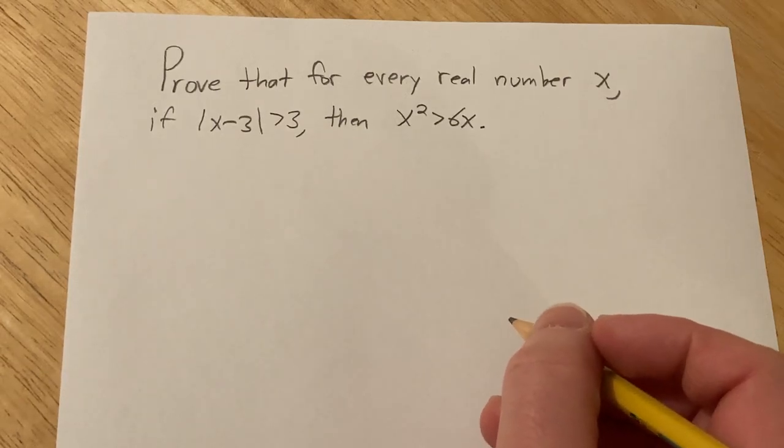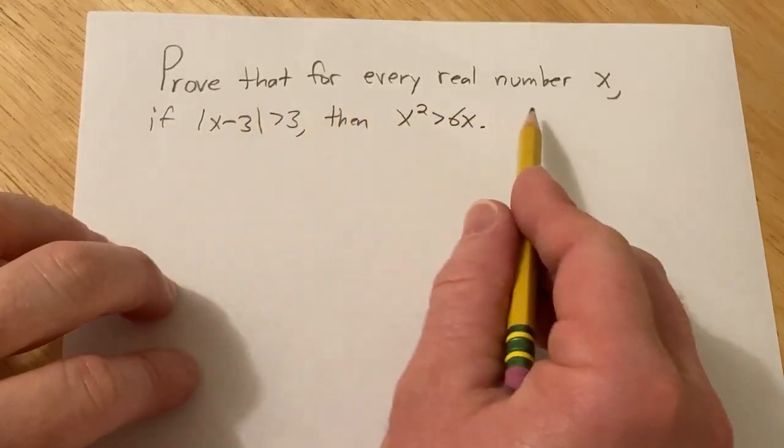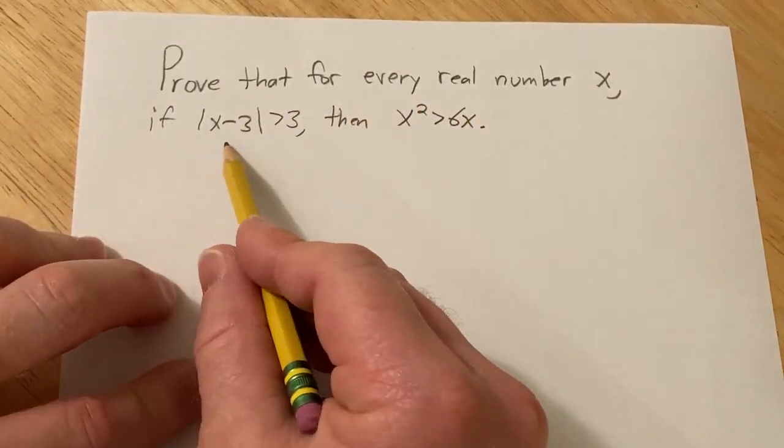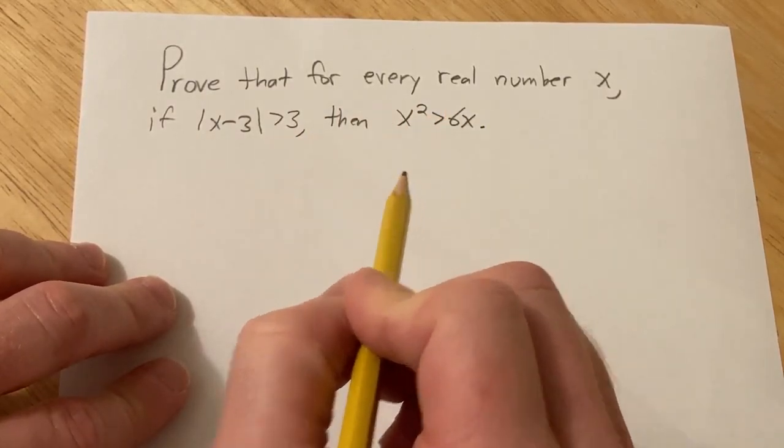Hello, in this problem we are going to do a mathematical proof. Prove that for every real number x, if the absolute value of x minus 3 is greater than 3, then x squared is greater than 6x.